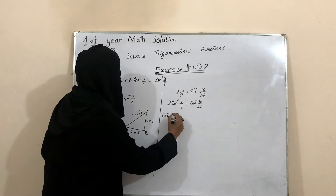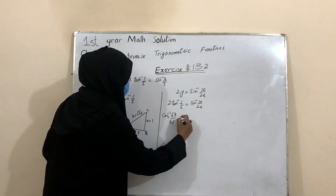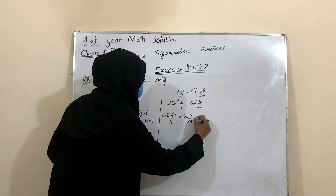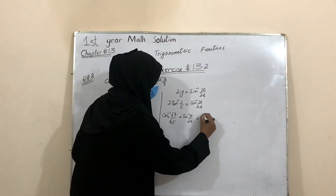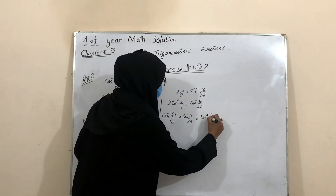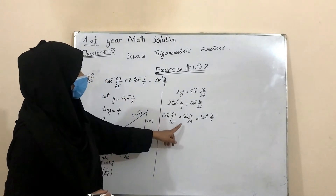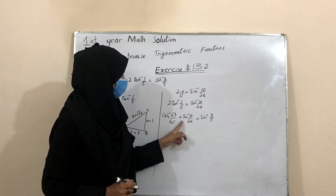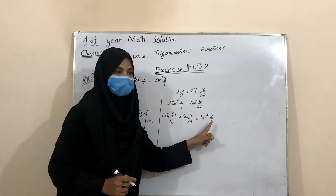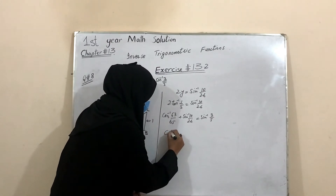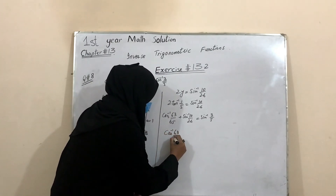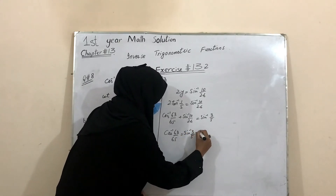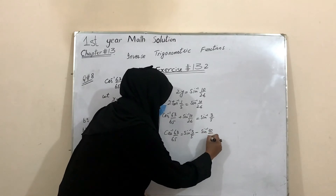So cos⁻¹(63/65) + sin⁻¹(10/26) = sin⁻¹(3/5). Rearranging, since sin⁻¹(10/26) moves to the other side with a minus sign: cos⁻¹(63/65) = sin⁻¹(3/5) − sin⁻¹(10/26).